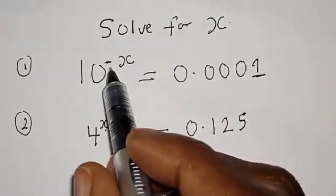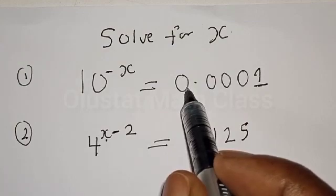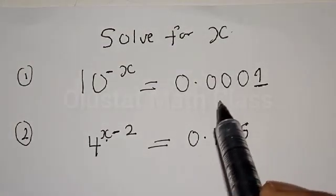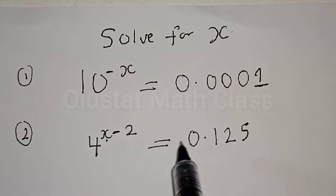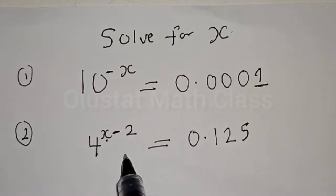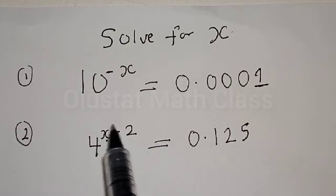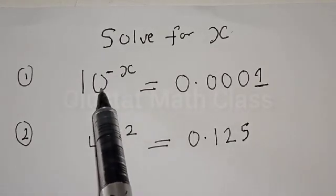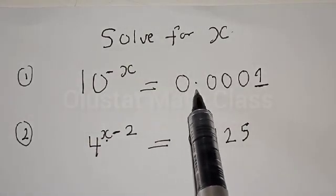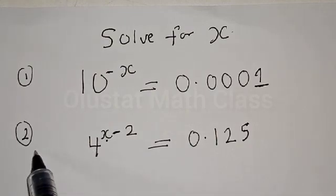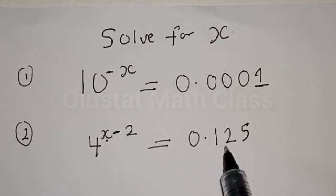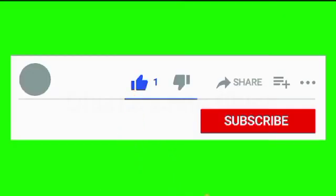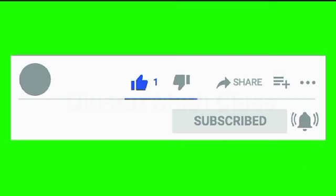Solve for s: 10 raised to power minus s is equal to 0.0001. Also we have 4 raised to power x minus 2 is equal to 0.125. Hi everyone, welcome to this class. In this class we want to look at how to solve for s from these given exponential equations. Before we proceed, please don't forget to like, share, comment and subscribe.